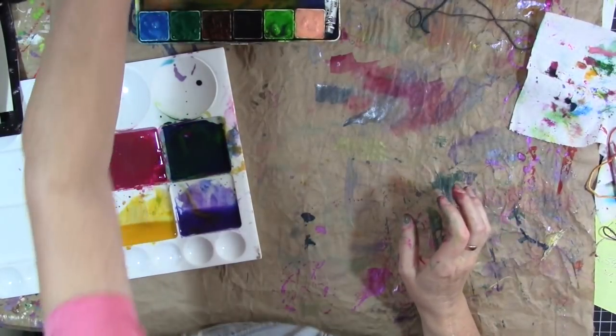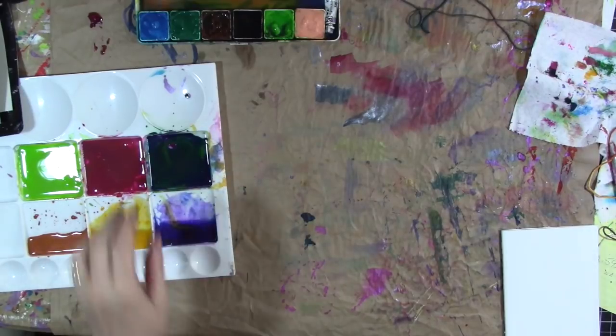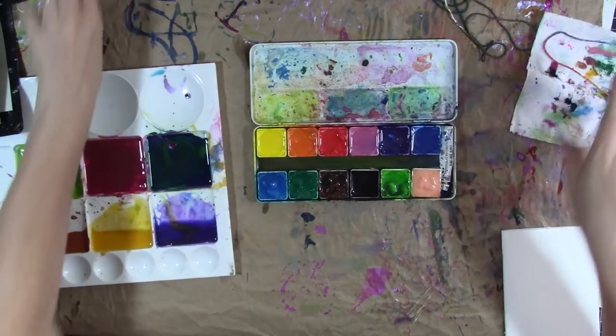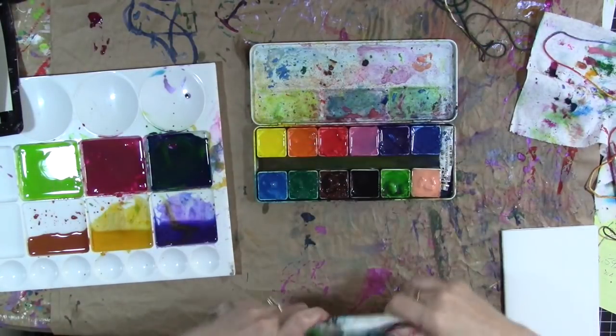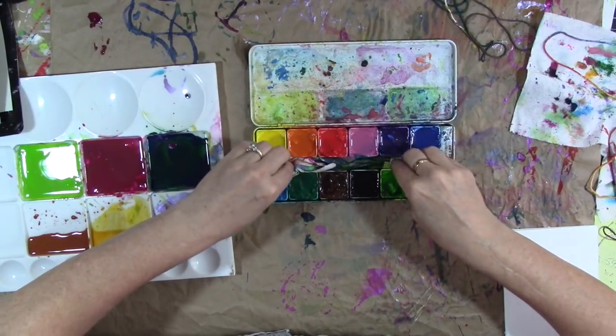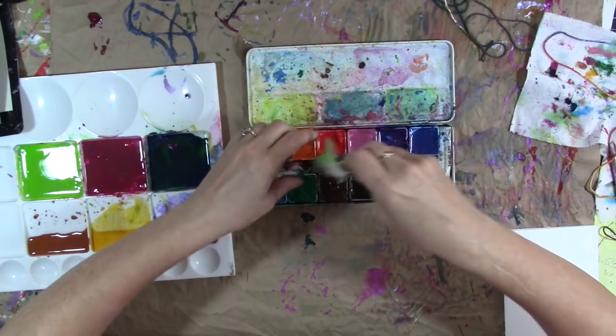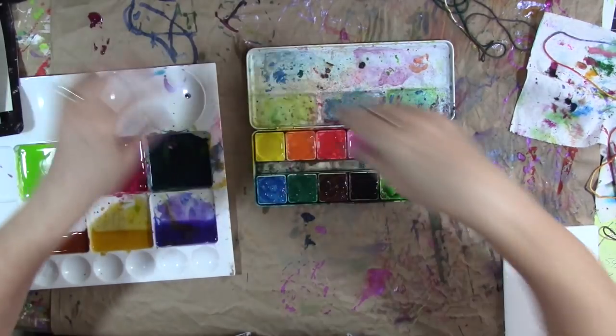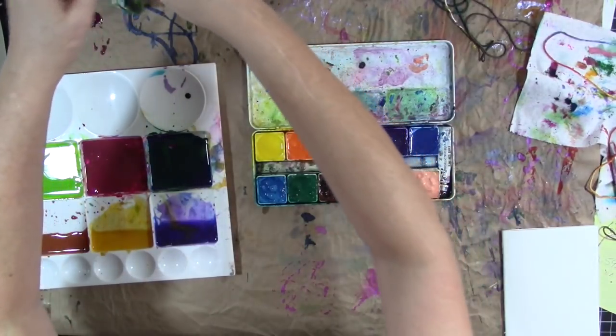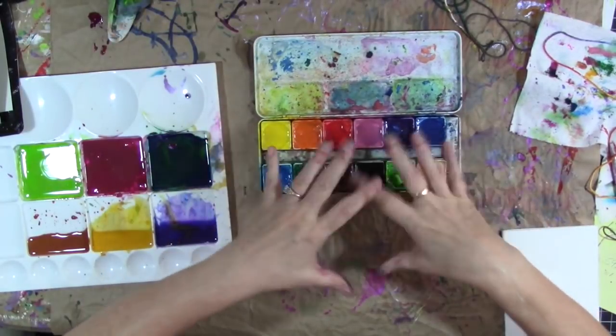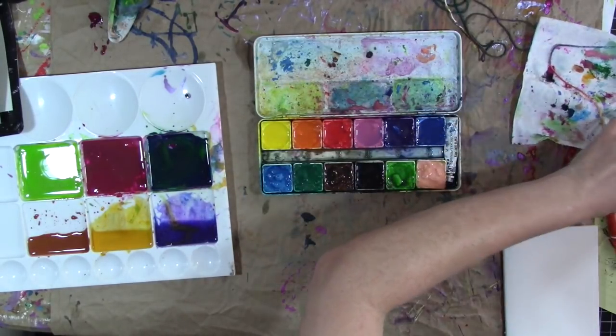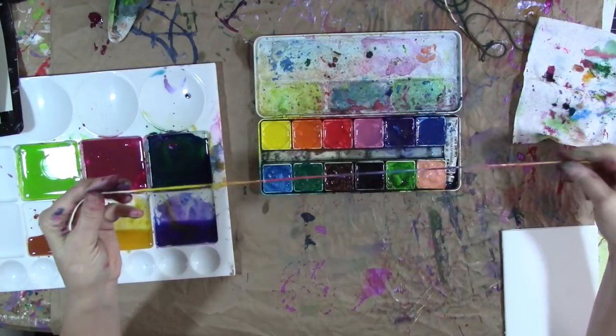You know what's fun? Take a pan of watercolors, any kind of watercolors. This used to be a good set of watercolors, and then I used them all up. And then I had these watercolor crayons that I didn't really like, so I crumbled them up in the pans and just made my own watercolor. And that's what this is all about. That's why it looks so grungy, but it's just color. I don't care, I just want color.